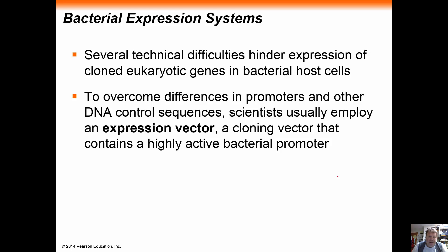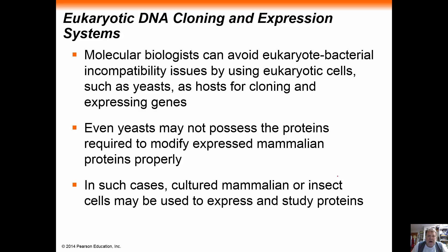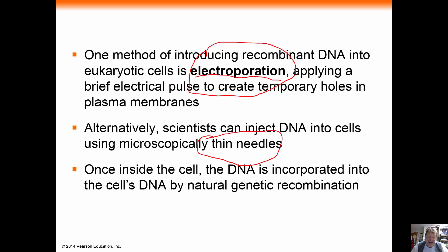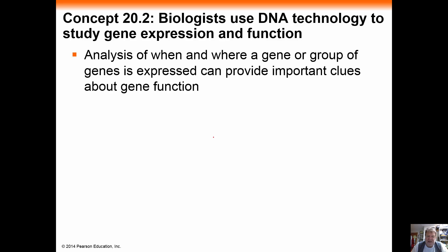Eukaryotic genes are a little different because we need an expression vector. Because eukaryotic genes have introns and exons, we often have to make a cDNA copy of the messenger RNA. It is much harder to get DNA into a eukaryotic cell. We can use electroporation — sending an electrical charge across the plasma membrane to transiently make holes in it — or use very thin needles to inject DNA directly into the cell, or use lipofection, among other methods.